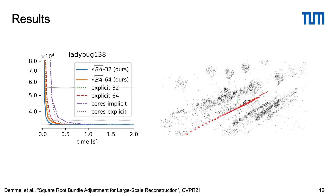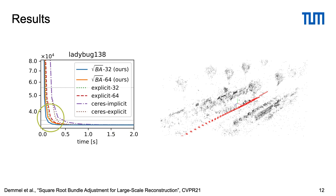On to the evaluation. We compare our square root solver in single and double precision, a custom implementation of Schur complement, as well as two variants of the popular Ceres library. Looking at the cost evolution of an example problem, we can see that while all methods reach a similar final cost, the proposed solver in blue is the fastest.